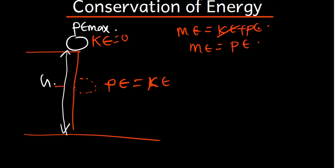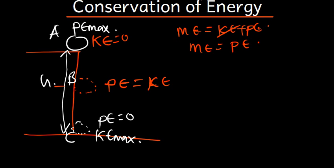Just before the object hits the ground, the height H is zero, so potential energy is zero, and kinetic energy is at its maximum. All the potential energy from point A has been converted to kinetic energy at point C. That is why we say energy cannot be created or destroyed, but it can be transformed from one form to another.